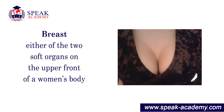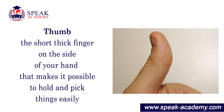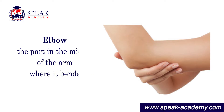Breast: either of the two soft organs on the upper front of a woman's body. Thumb: the short thick finger on the side of your hand that makes it possible to hold and pick things up easily. Elbow: the part in the middle of the arm where it bends.